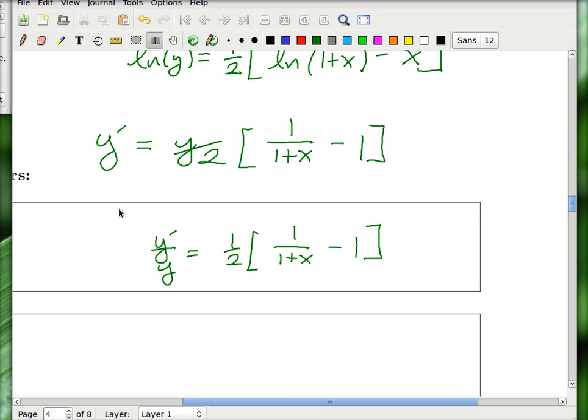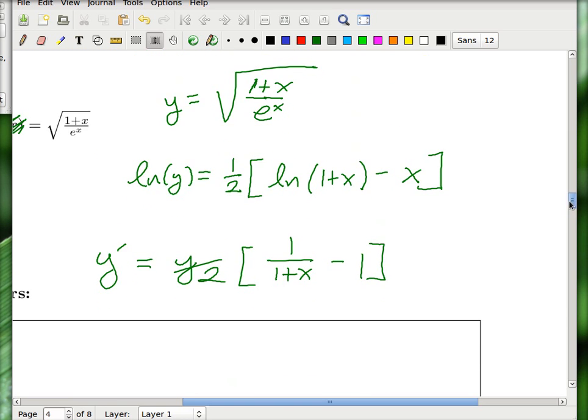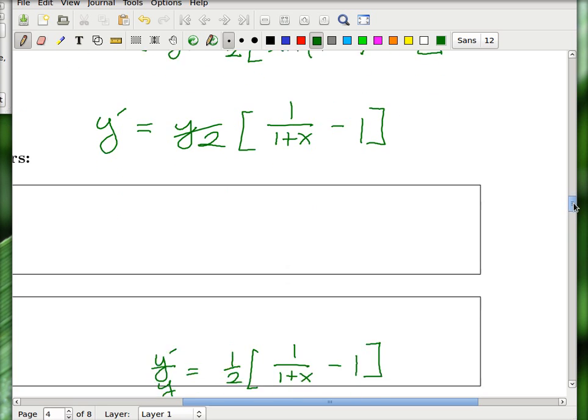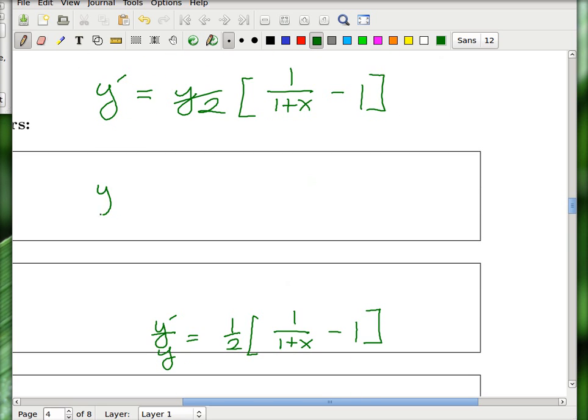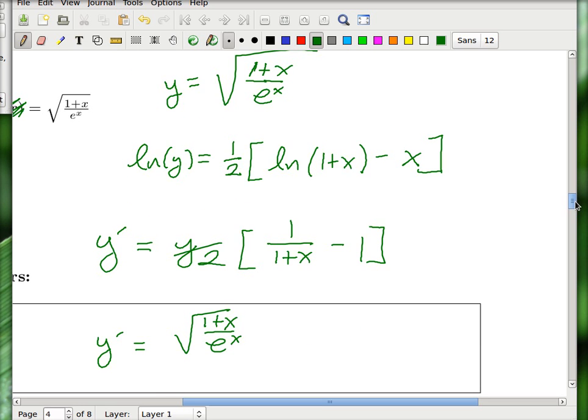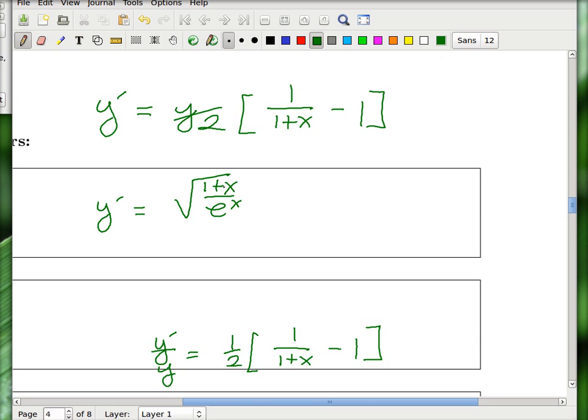And then you get y prime is equal to y times, let's just say y over 2, 1 over 1 plus x minus 1. So all I did was clear by y. And there's the original y. It's expressed neatly in terms of x. So I'll just sub that back in. So here's another correct answer.